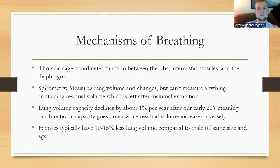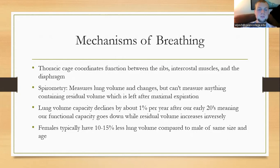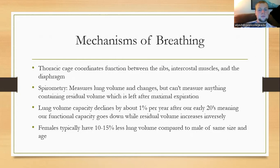The mechanisms of breathing are coordinated via the ribs, thoracic cage, intercostal muscles, and diaphragm. How we measure volumes going in and out of the lungs is called spirometry, which measures lung volumes and changes. The only thing spirometry cannot measure is residual volume — the amount of air left in the lungs after maximum expiration that never leaves. Lung volume capacity declines by about 1% per year after our 20s due to a lack of elasticity. Females usually have about 10-15% less lung volume than males, mostly due to body size and thoracic cage size.